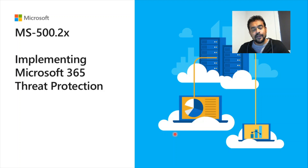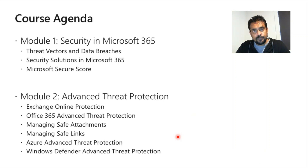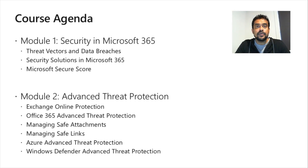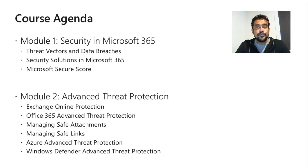In the second course we'll talk about Microsoft 365 Threat Protection — covering a range of threat vectors. Since MS-500 combines Microsoft 365 product knowledge and cybersecurity, we'll discuss various threat vectors for this cloud product, security solutions in Microsoft 365, and Microsoft Secure Score, which gives a quantitative value about your tenant's security posture and suggests improvements.